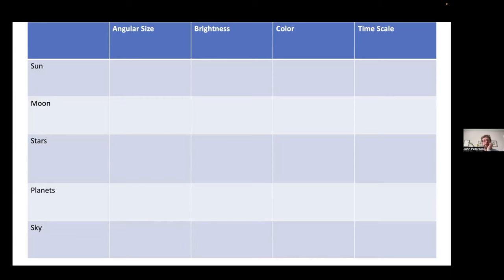Imagine you are an ancient astronomer thousands of years ago, and you just wanted to figure out what kind of universe you live in. I made this little table which you all should have a copy of. We put five things in the rows — the most obvious things you could see in the sky: the sun, the moon, the stars, the planets, and the sky itself. The columns have four different things you could possibly measure, and with just your eyes you could measure these things.